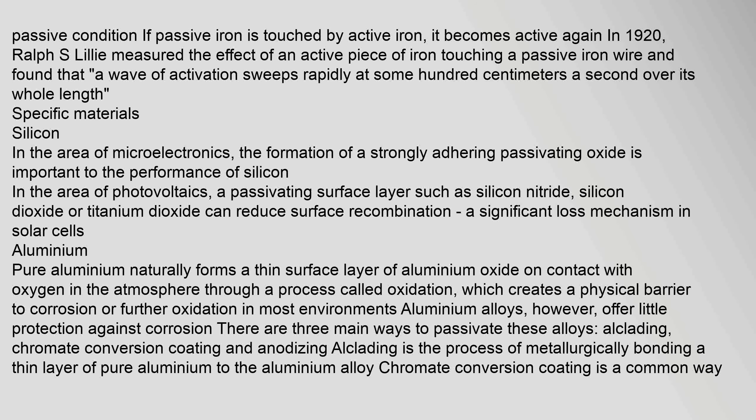Pure aluminium naturally forms a thin surface layer of aluminium oxide on contact with oxygen in the atmosphere through a process called oxidation, which creates a physical barrier to corrosion or further oxidation in most environments. Aluminium alloys, however, offer little protection against corrosion. There are three main ways to passivate these alloys: Alclading, chromate conversion coating, and anodizing.